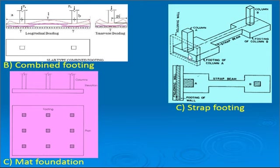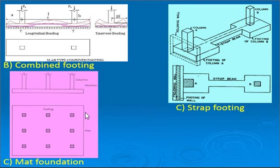Strap footing is particularly used when the boundary of the plot is very close to the footing and projection of the footing beyond the boundary line is not allowed. Mat foundation, also called raft foundation, provides one uniform footing for all the columns of the building. It may or may not be provided with beams.